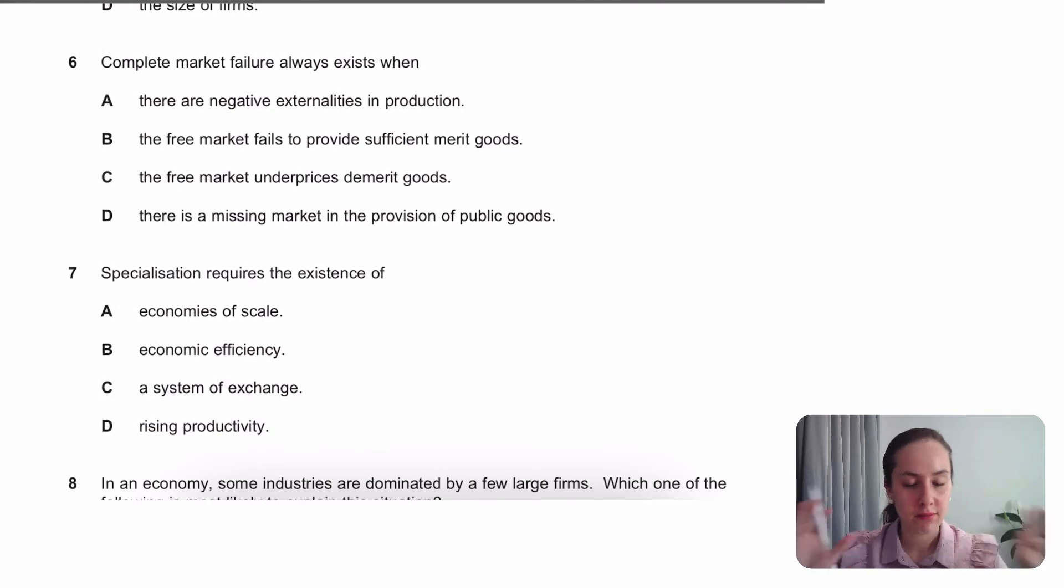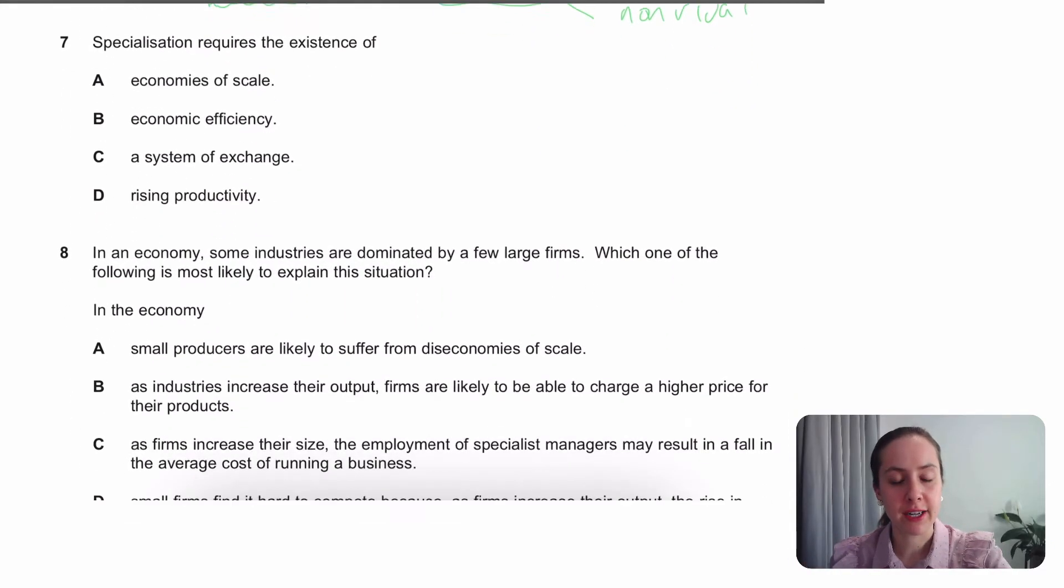Complete market failure. Market has completely failed when there is no production. So if I were to draw a graph, this graph would be empty in the context of complete market failure. And the only ones that can do that are the word missing market. It's a really good clue actually, is a public good. Public goods, there's no provision whatsoever because they are non-excludable and non-rival. Non-excludable and non-rival. Those two things cause complete market failure.